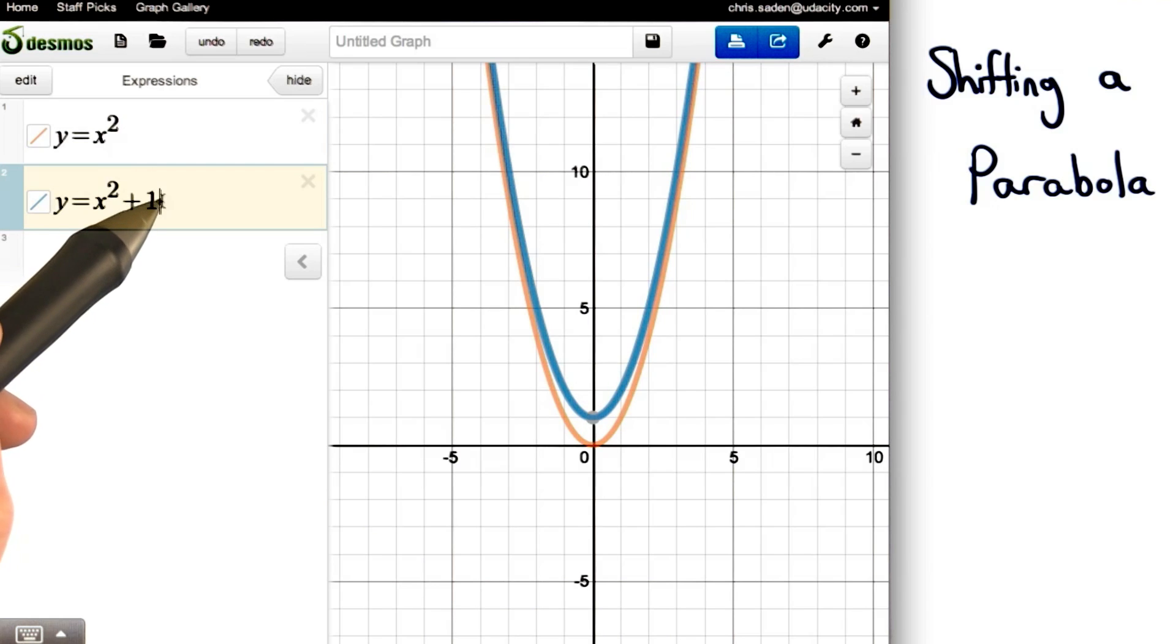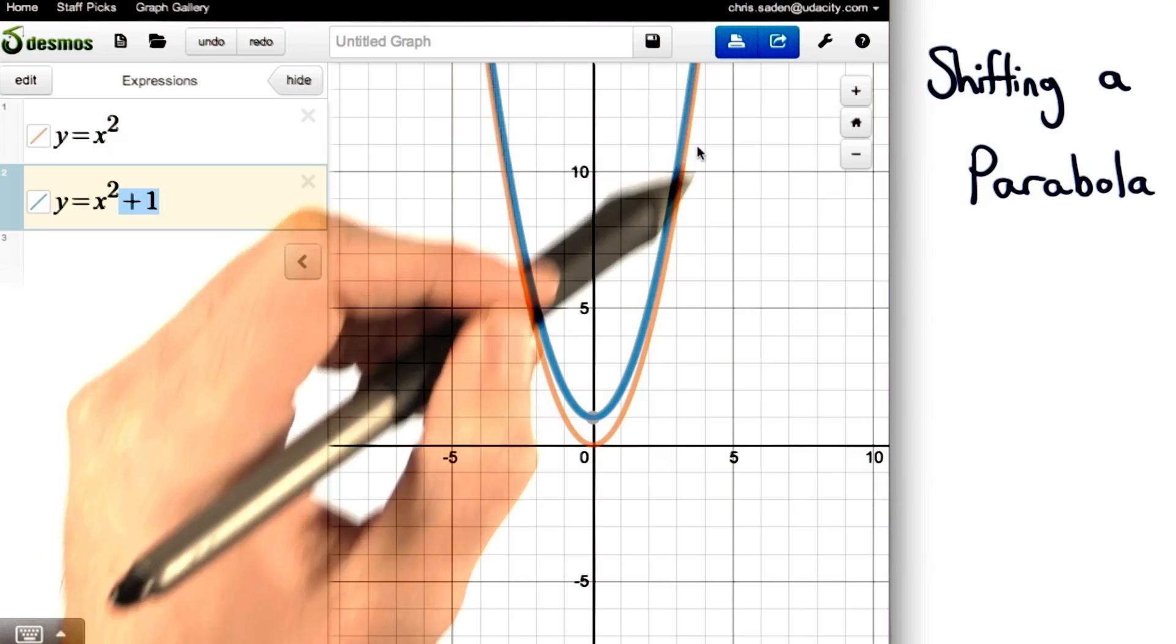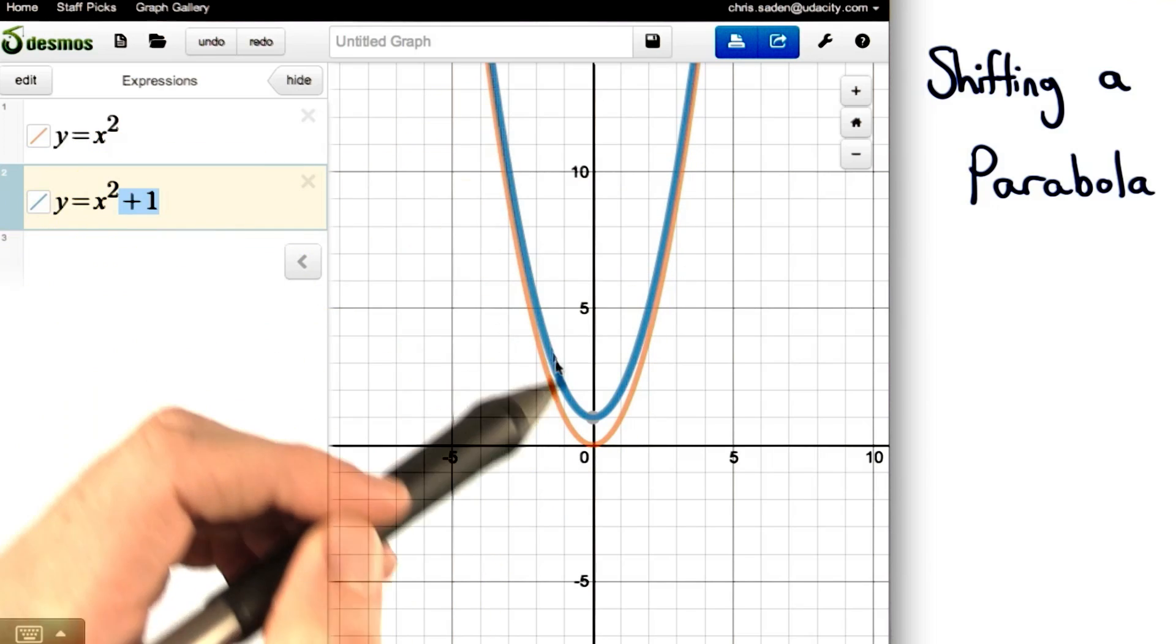By adding one right here to the end of our equation, we really increase all the y values from before by 1. This is why the entire graph, the orange graph, shifts one unit up.